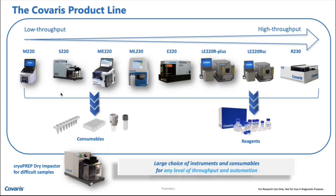We have a broad product portfolio, lined up by throughput capability. On the lower end, instruments can do one sample at a time, then one to eight samples at a time, and moving up to instruments that can handle a 96-well plate or a 384-well plate. We also provide specific proprietary consumables that enhance AFA energy's capability to create cavitation bubbles for DNA and RNA shearing, tissue disruption, cell lysate homogenization, faster digestion, and better binding for protein analysis.